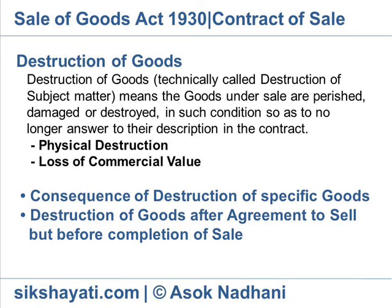Example: M agrees to sell a horse to N for the purpose of riding for Delhi immediately. At the time of formation of contract, the horse was not fit for the said purpose, but M and N are ignorant of this fact. Hence, the agreement is void. Example: A cargo of oats were sold. The oats were contaminated with seawater so as to be unsellable as oats, though they could be used for making spirits. Held, the contract was void as the oats no longer answered their description in the contract.